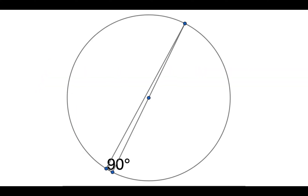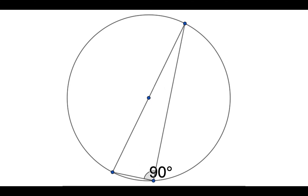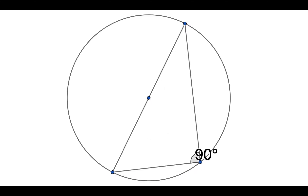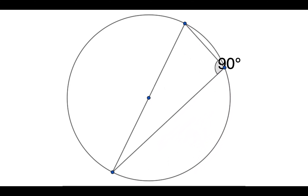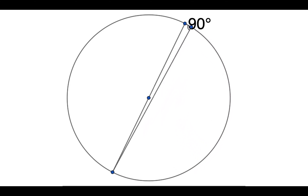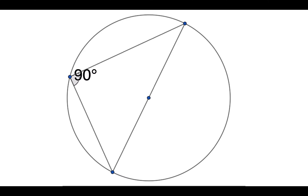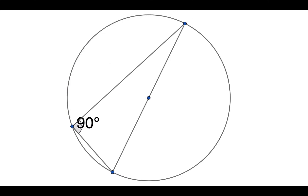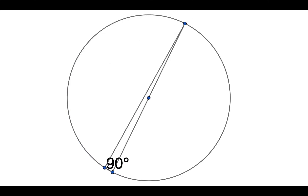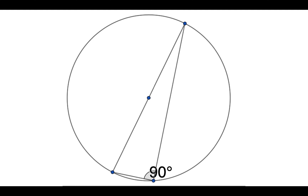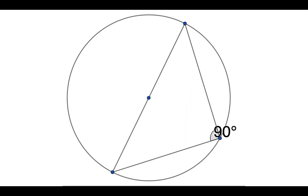Our first circle theorem is about the angles in a semicircle. You can see that we've got a diameter drawn here across the centre of a circle, and when we connect that up with a point on the outside we get a 90 degree angle. So we always get a right angle in a semicircle.